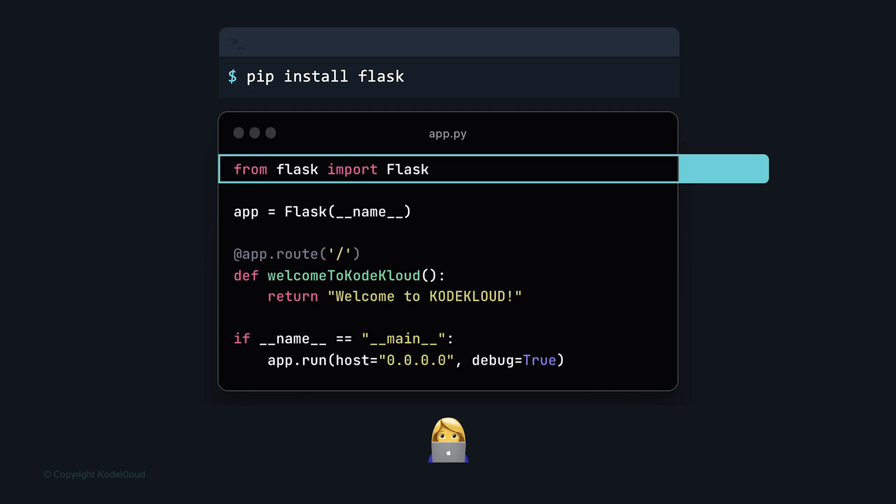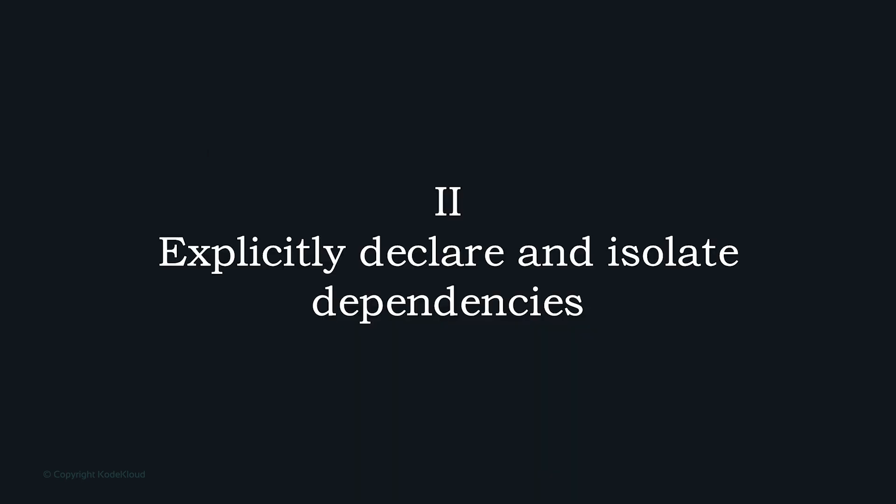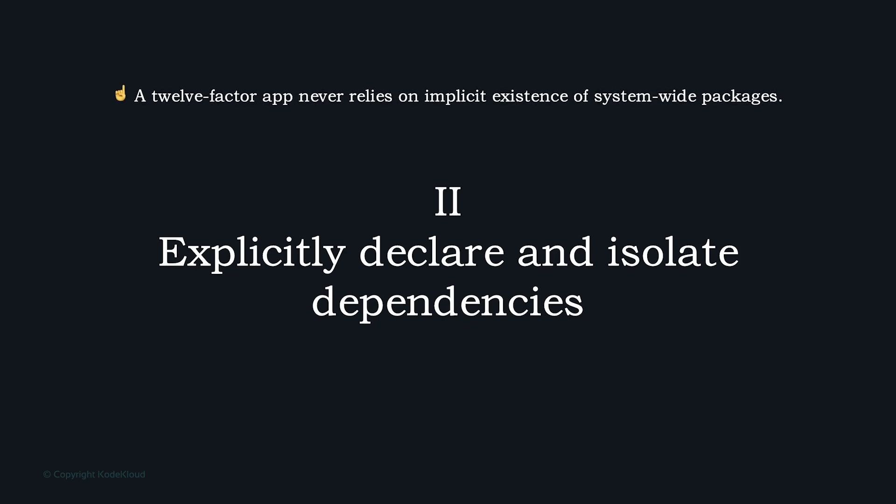Flask is just one dependency of the web application. As the application grows, there may be many additional third-party dependencies. A 12-factor app never relies on the implicit existence of system-wide packages — you cannot assume that dependencies like Flask will exist on the system where you run your app.